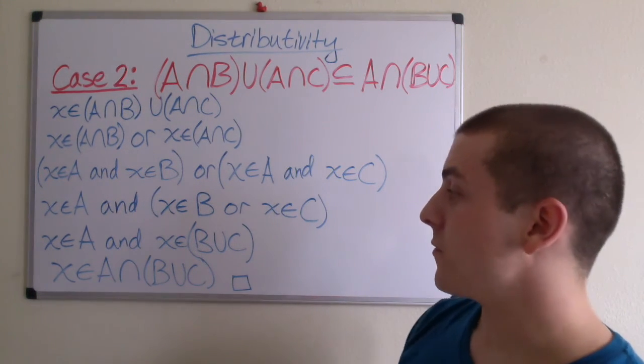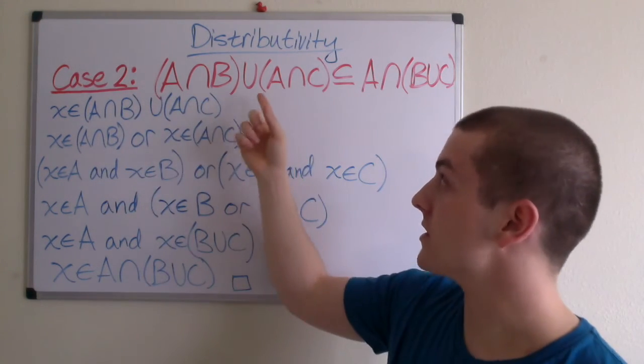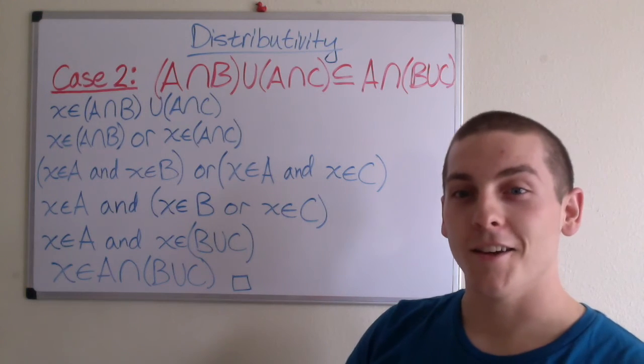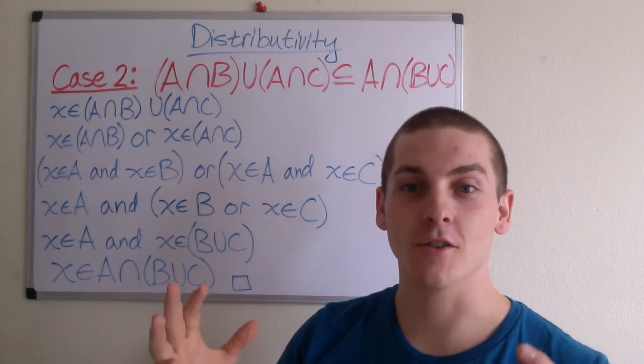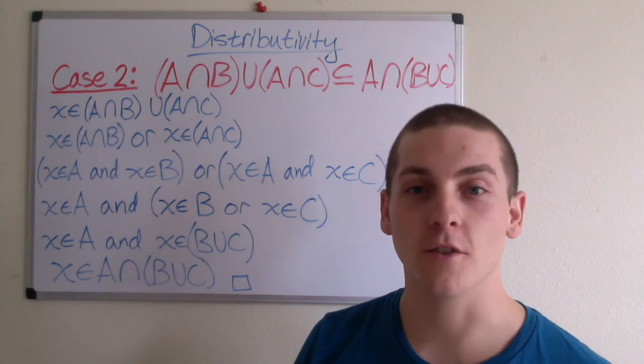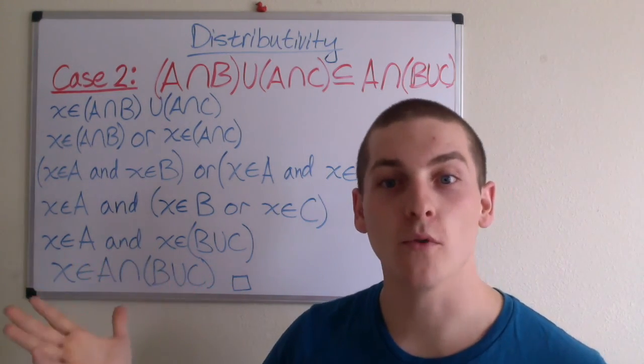So there you have it. We've proved that X is an element of both of these and therefore this is a subset of this. And we've shown that both sides of the equation are subsets of each other and therefore the distributive law is, in fact, true. It's proven.